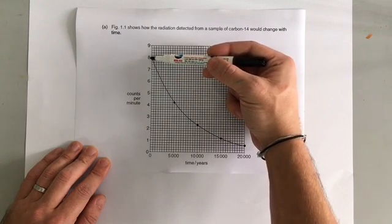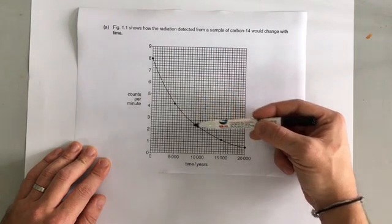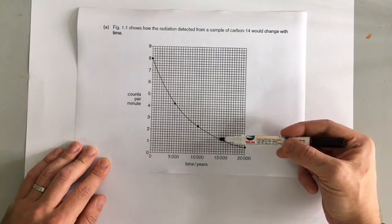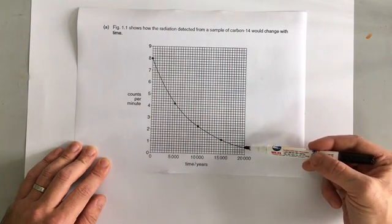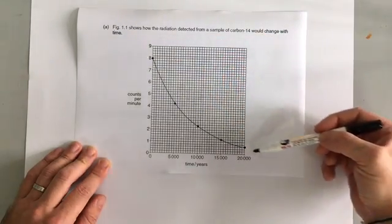And here it starts off at eight and then it halves to about four, just over four. And then later it halves again to just over two, and then it halves to just over one, and then it halves to just over a half. And so you can see that this is forming quite a clear curve.